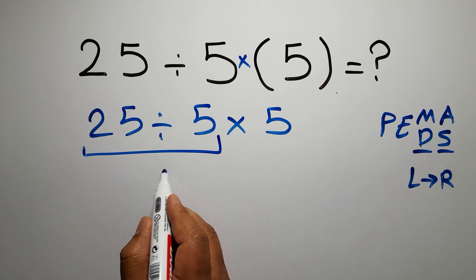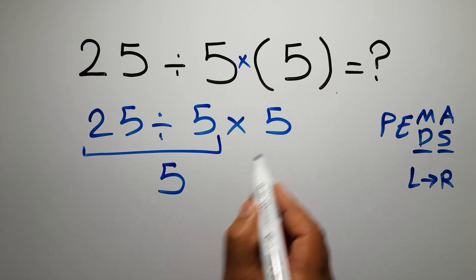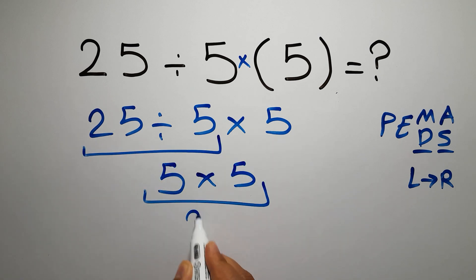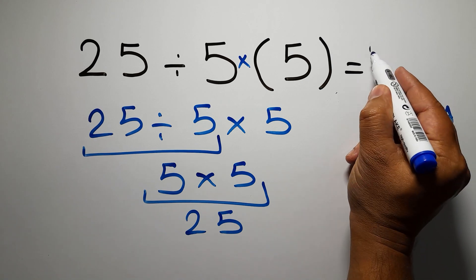5, which equals 5, and 5 times 5 equals 25. This is our final answer to this problem. The correct answer is 25.